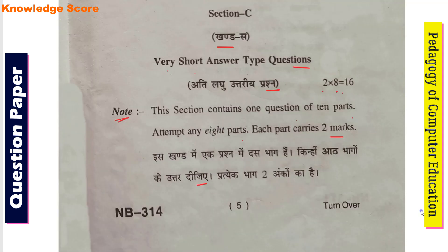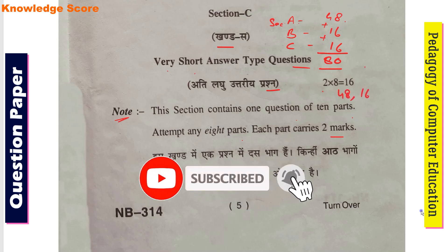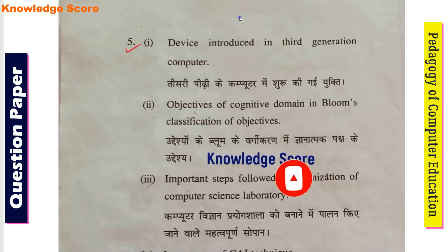Section A is 48 marks, Section B is 16 marks, and Section C is 16 marks. Adding all three gives a total of 80 marks. In Section C there are 10 questions, you need to attempt 8, and each question carries 2 marks.